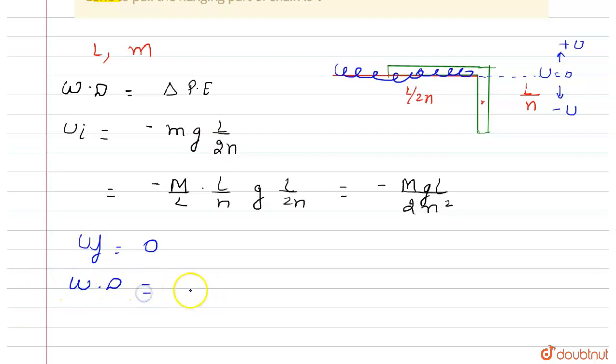Work done equals final minus initial energy, which is final minus initial energy, which equals zero minus of minus m g l by 2n square.